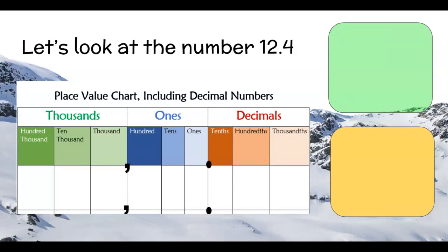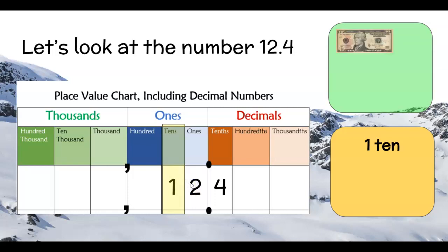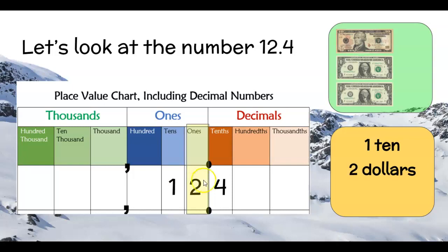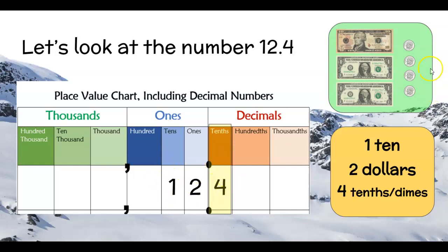Now let's bring in some decimals. We'll put in our place values: we have four tenths, then twelve ones — one ten and two ones. When thinking about decimals we usually think about money. We could say 110 is like one ten-dollar bill, our two ones are two separate dollar bills, and four tenths are represented by dimes in our money system — so four dimes. Our money is all together, nice and organized.